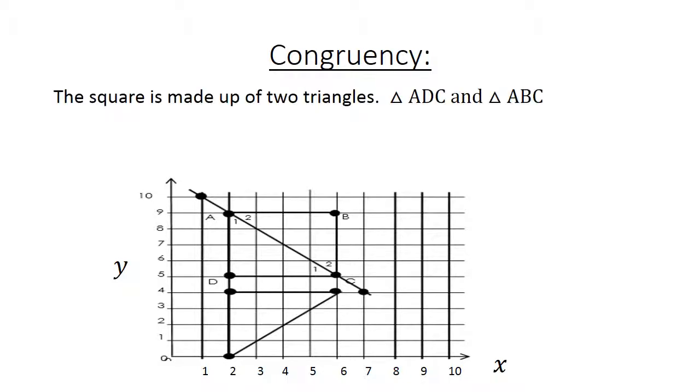The square is made up of two triangles, triangle ADC and triangle ABC. Angles B and D are both 90 degrees.